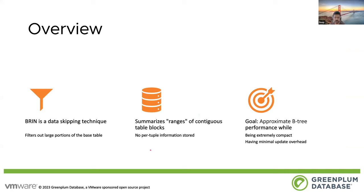BRIN is a data skipping technique. You want to filter out large portions of your base table in your query. What it does essentially is it summarizes ranges of contiguous table blocks and keeps the summary information around. It's a very compact summary because we are not storing per-tuple information like other indexes such as B-tree. Instead, we store — for example, blocks 1 to 100 — what is the minimum value and maximum value. With this kind of summarization of the data, BRIN indexes end up being extremely compact and have very minimal update or insert overhead.